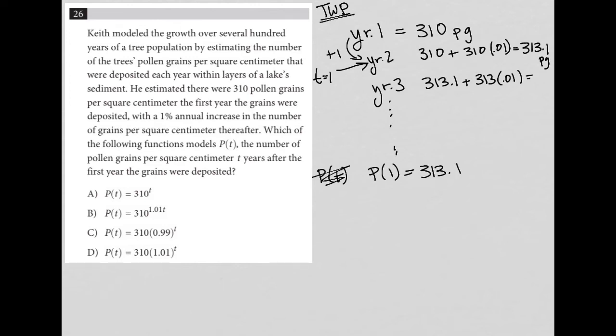So let's see. If I were to plug T, if I were to replace that T with one here, that will not equal 313.1. So A is gone.